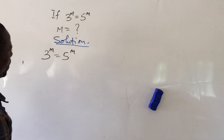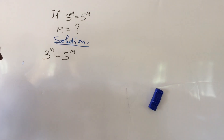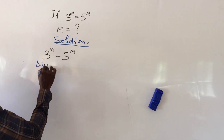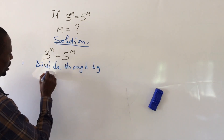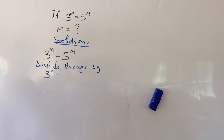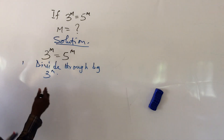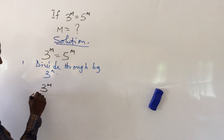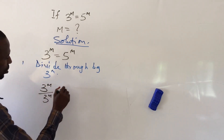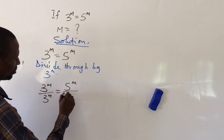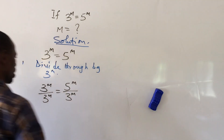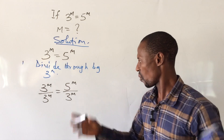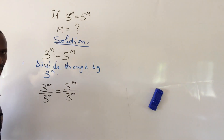The first thing to do here is divide both sides by 3 to the power of m. So we have 3 to the power of m all over 3 to the power of m, equal to 5 to the power of m all over 3 to the power of m.